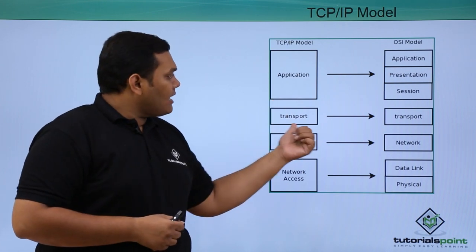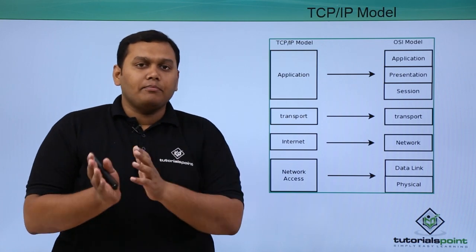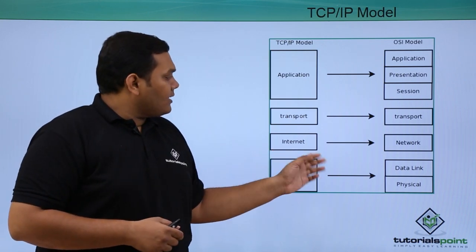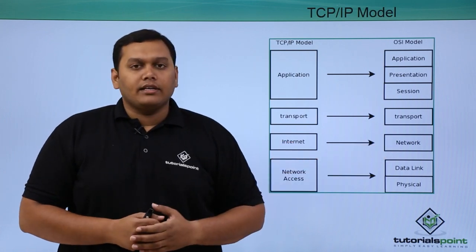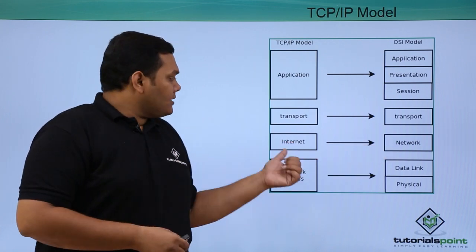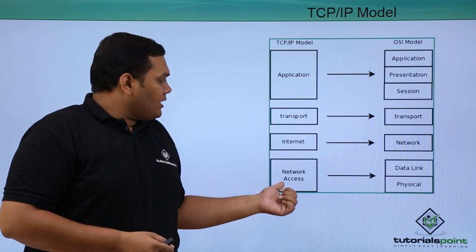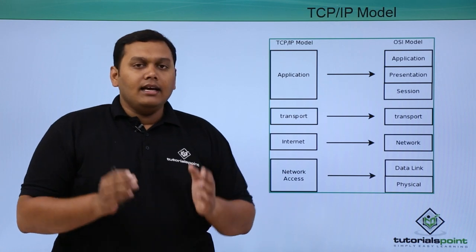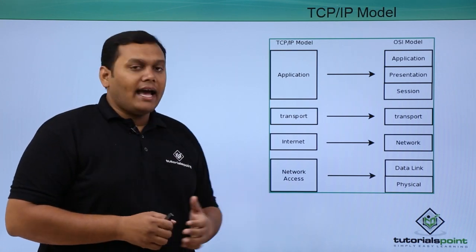The transport layer in TCP/IP stays as the transport layer, same as in the OSI model. The internet layer in TCP/IP corresponds to the network layer in OSI — whatever happens over the internet is captured under this layer. The physical layer and data link layer are combined and called the network access layer.